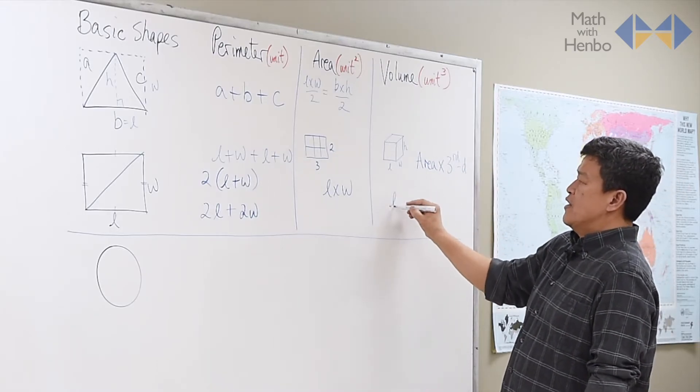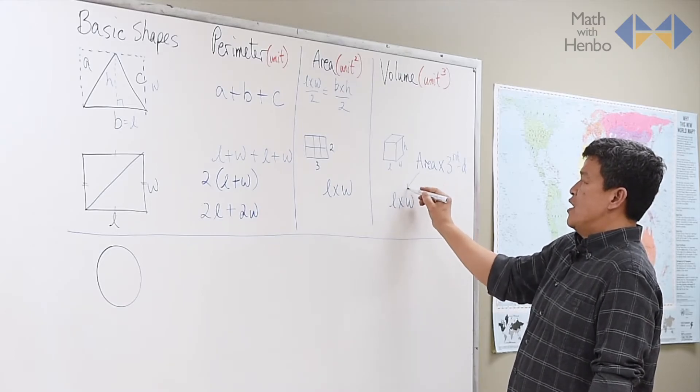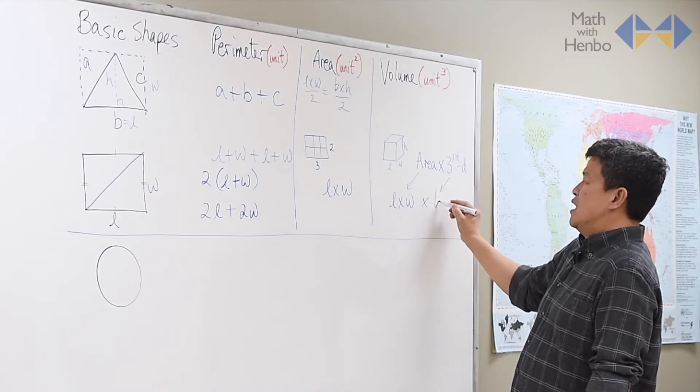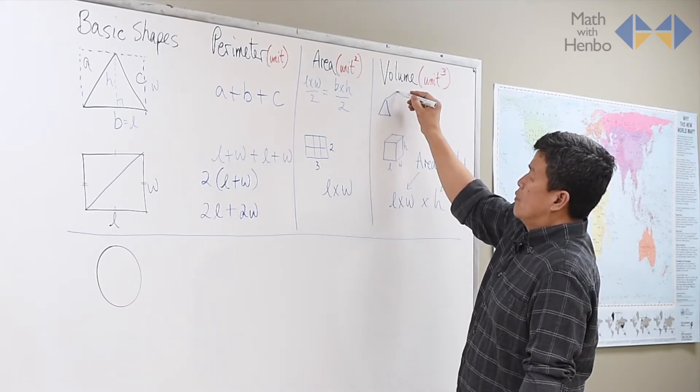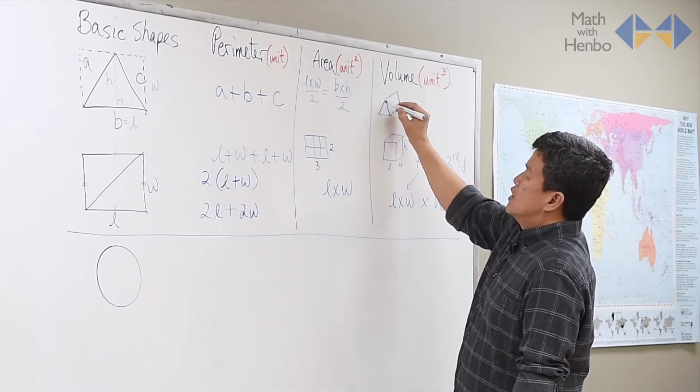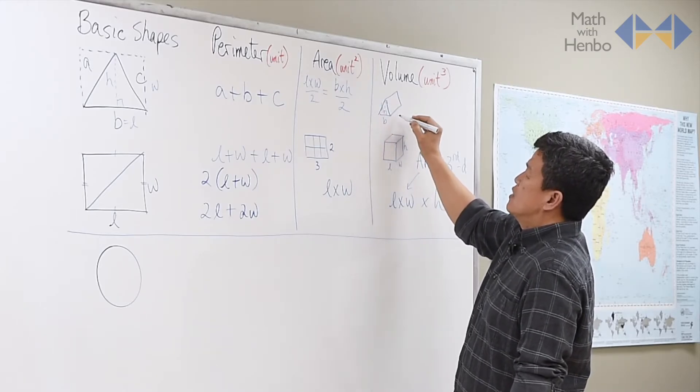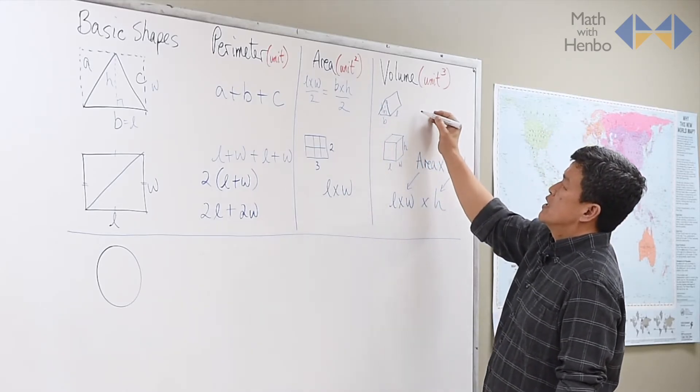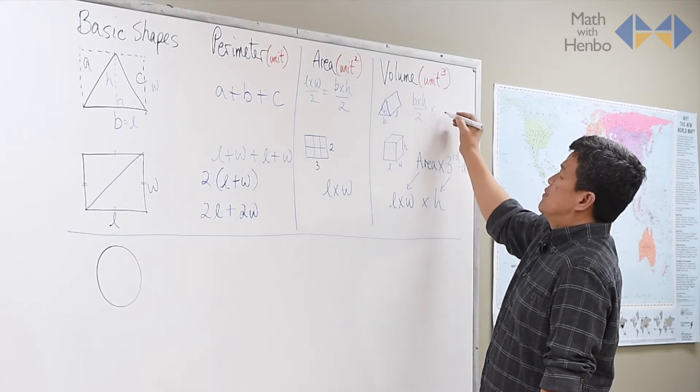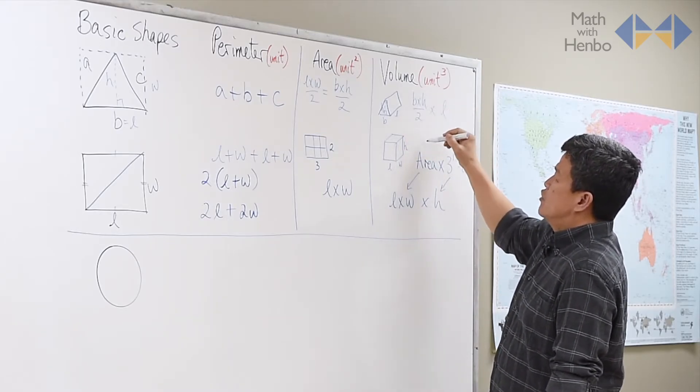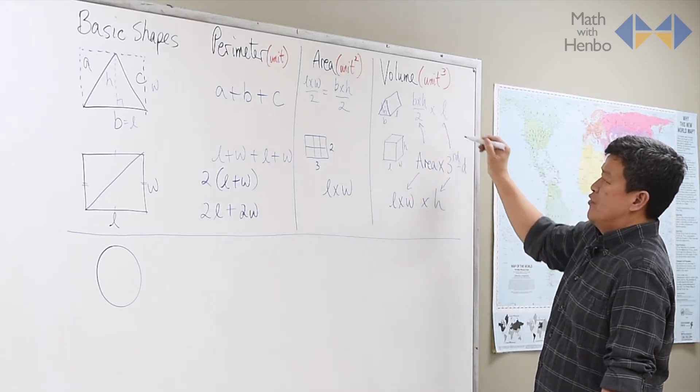So here, it's length times width, which is the area, times the height. For the volume of a triangle, essentially the same thing. Base times height times the length of an object. So base times height being divided by two times the length of an object. And here's your area, and here is your third dimension.